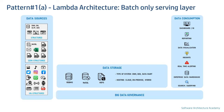A Lambda pattern has both batch and real-time processing — it can actually be considered as a combination of two systems. On the other hand, Kappa architecture, adoption of which has increased rapidly over the past few years, eliminates the need for batch altogether by focusing on real-time processing only.